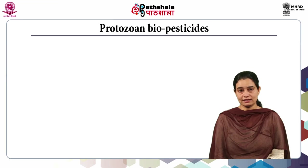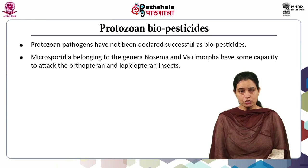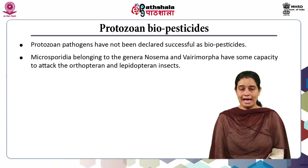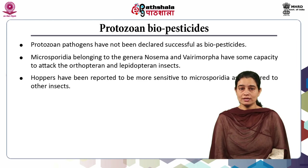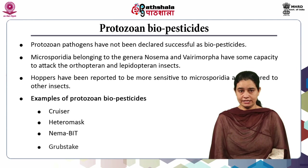Coming to the next classification, protozoan biopesticides have not been declared as much successful as biopesticides. Microsporidia belonging to the genera Nosema and Vairimorpha have some capacity to attack orthopteran and lepidopteran insects. Hoppers have been reported to be more sensitive to Microsporidia compared to other insects. Examples of protozoan biopesticides are Cruiser, Heteromask, Nema-BIT and Grubstake.